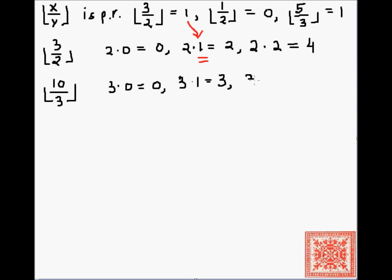So, 3 times 1 is 3. 3 times 2 is 6. We're still less than 10. 3 times 3 is 9. 9 is still less than 10.